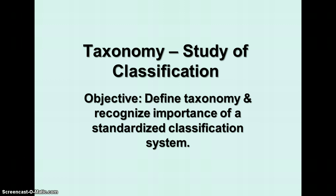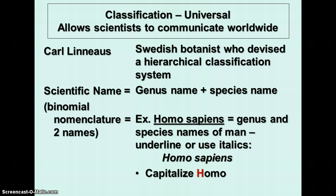We'll talk about the categories used to classify things and that define the kingdoms of living things. A universal classification system allows scientists worldwide to communicate and know that they're talking about the same organisms. The system we currently use was devised in the 1700s by a Swedish botanist named Carl Linnaeus. He came up with a system of classification based on a hierarchy of groups.